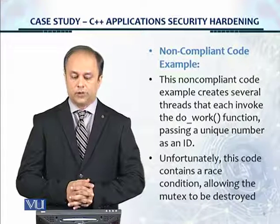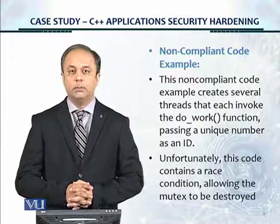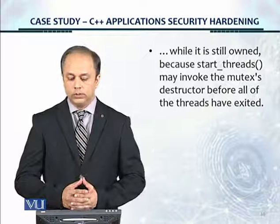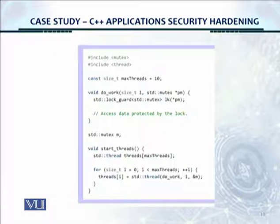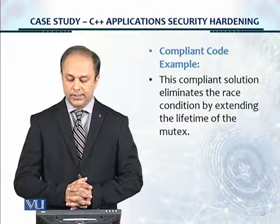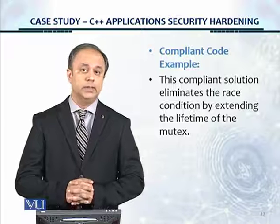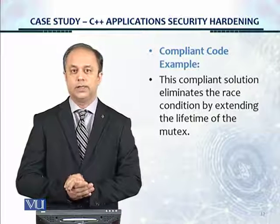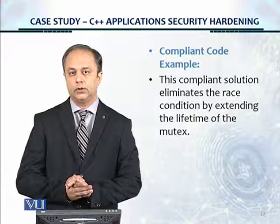The non-compliant code example creates several threads that each invoke the do_work function, passing a unique number as an ID. Unfortunately, this code contains a race condition allowing the mutex to be destroyed while it is still owned, because start_threads may invoke the mutex's destructor before all of the threads have exited. The compliant code example eliminates the race condition by extending the lifetime of the mutex. If you are a C++ developer, you must spend time looking at the URL shown on the first slide of this module. The Software Engineering Institute controls suggested by SEI for software security are really tremendous — a great resource to take advantage of.